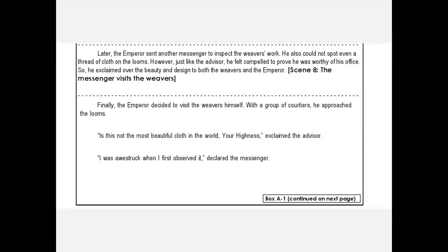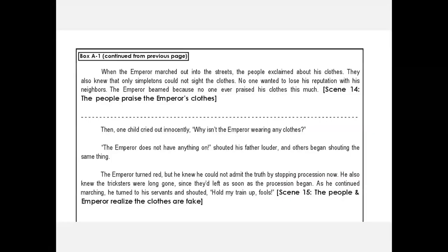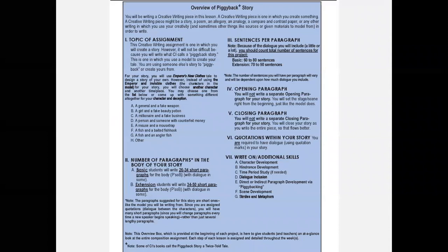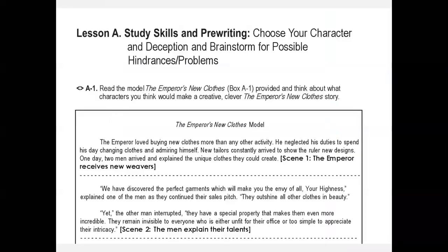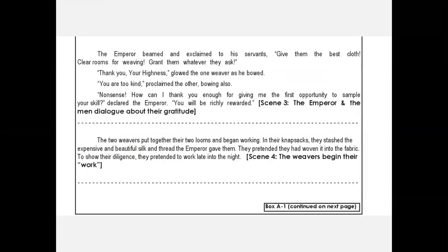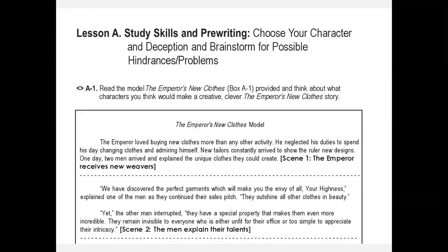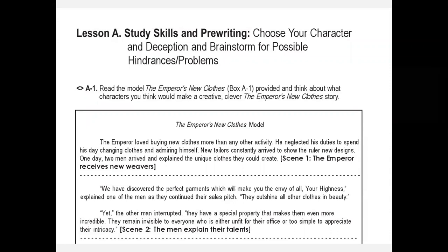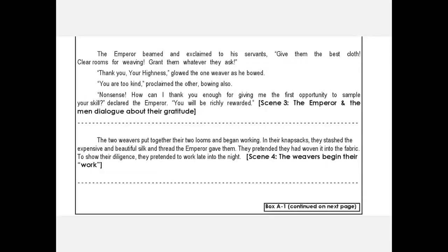Here's the model. We can see it has 15 to 16 scenes, but that is not the same as paragraphs — for basic students it's 26 to 34 paragraphs with 16 scenes. Scene one is one paragraph long — that's setting the stage. Scene two is two paragraphs long with one person speaking — those are the tricksters. Scene three has four paragraphs in it. I can't emphasize enough how they've already had so much paragraph development, dialogue writing, and quotation lessons before this point.